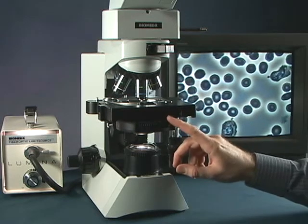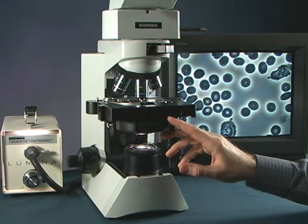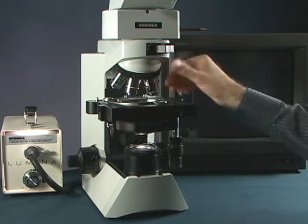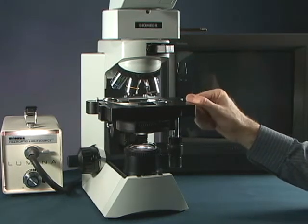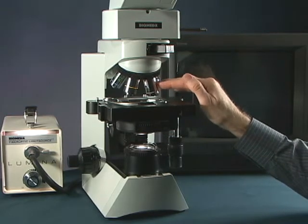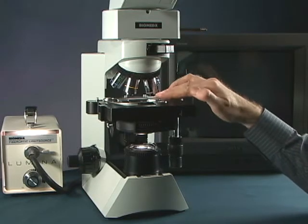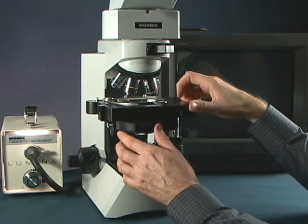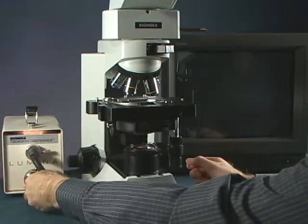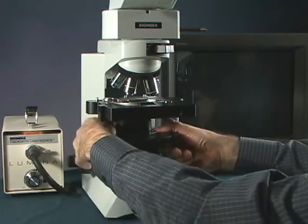Now this particular condenser will also do bright field. Sometimes we will use a low power objective here in bright field mode. For instance, there's a test called the oxidative stress test, or the dry layer test. We will use a low power magnification here. And when we put our low power magnification objective in place with another slide, we would actually be in the bright field mode.